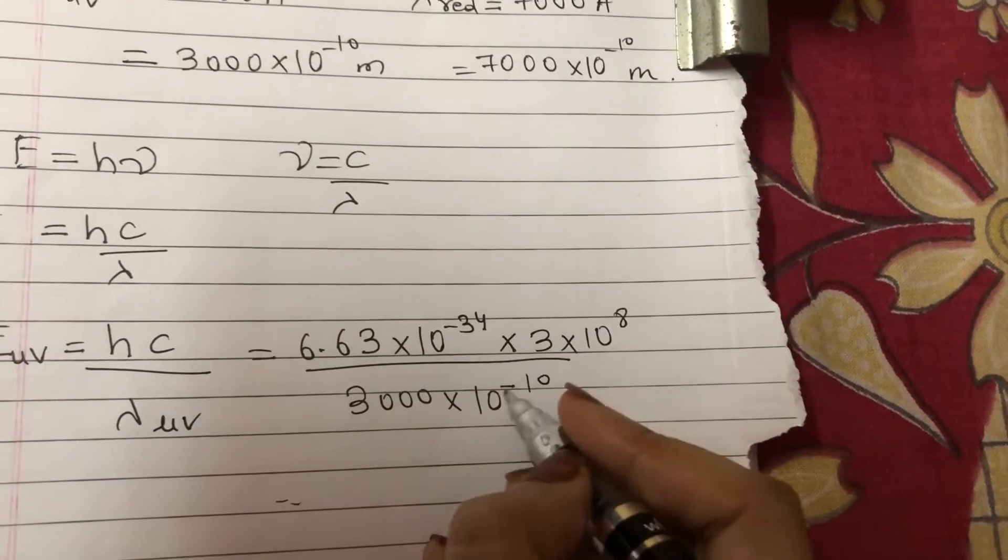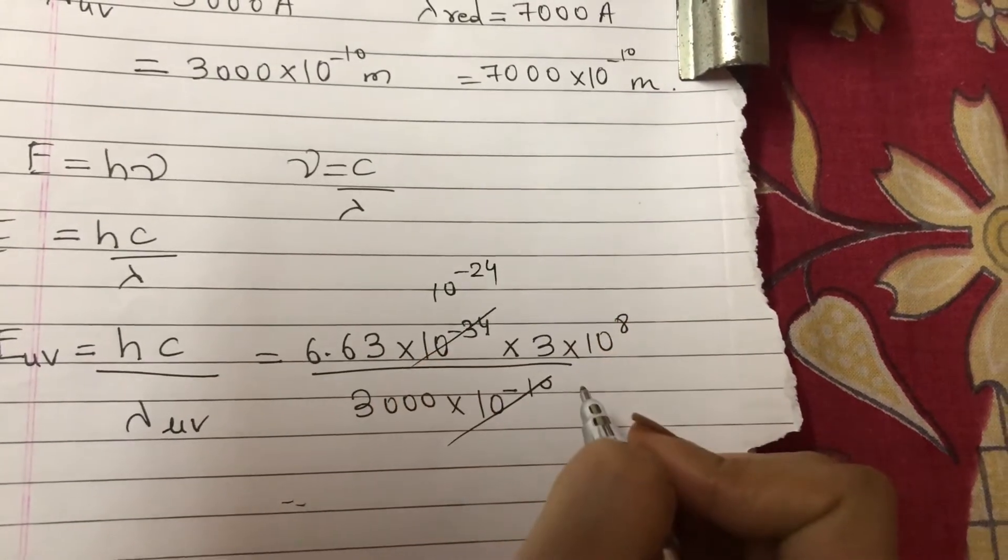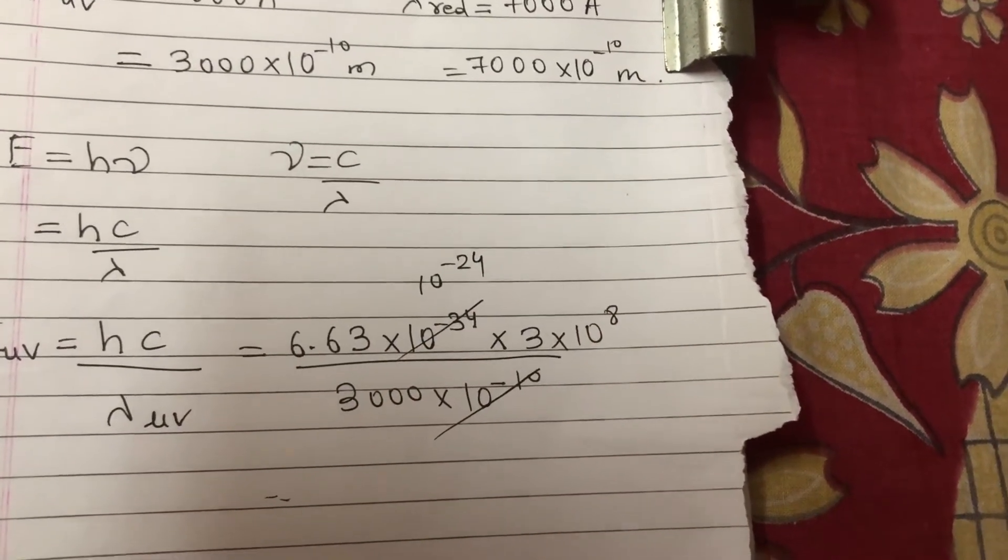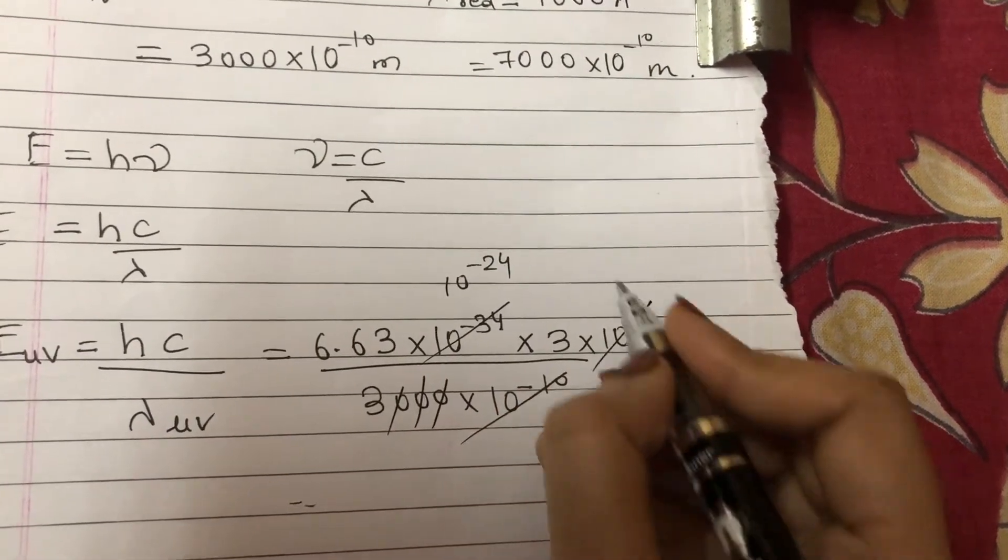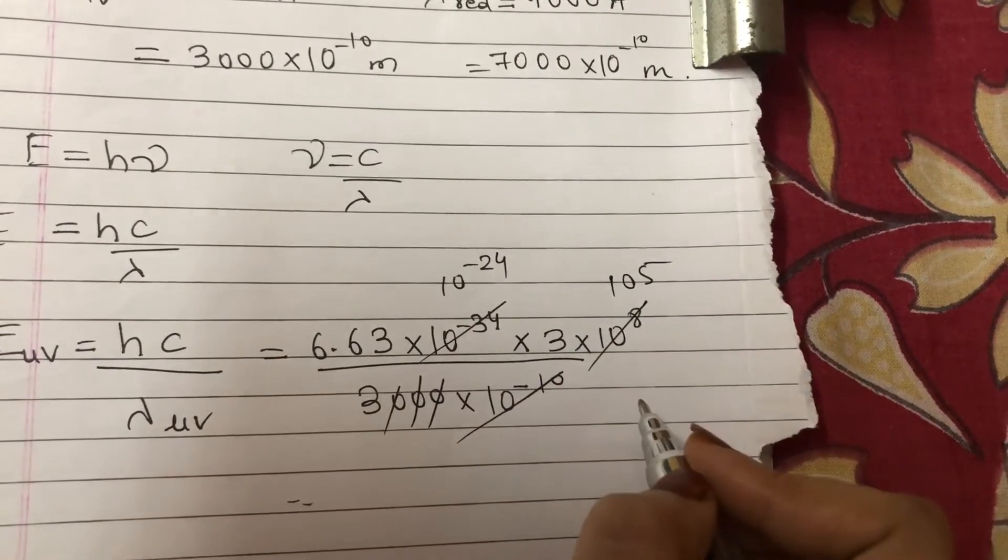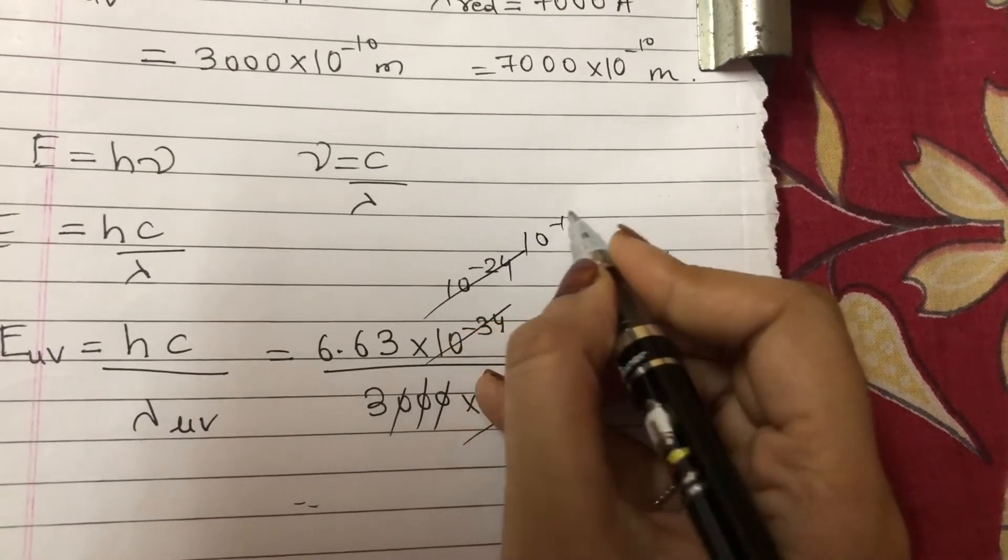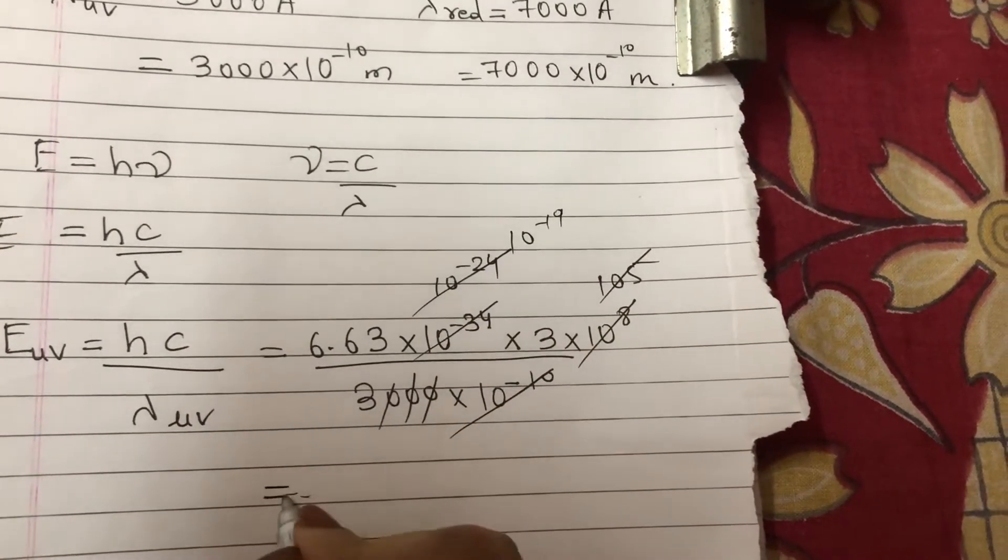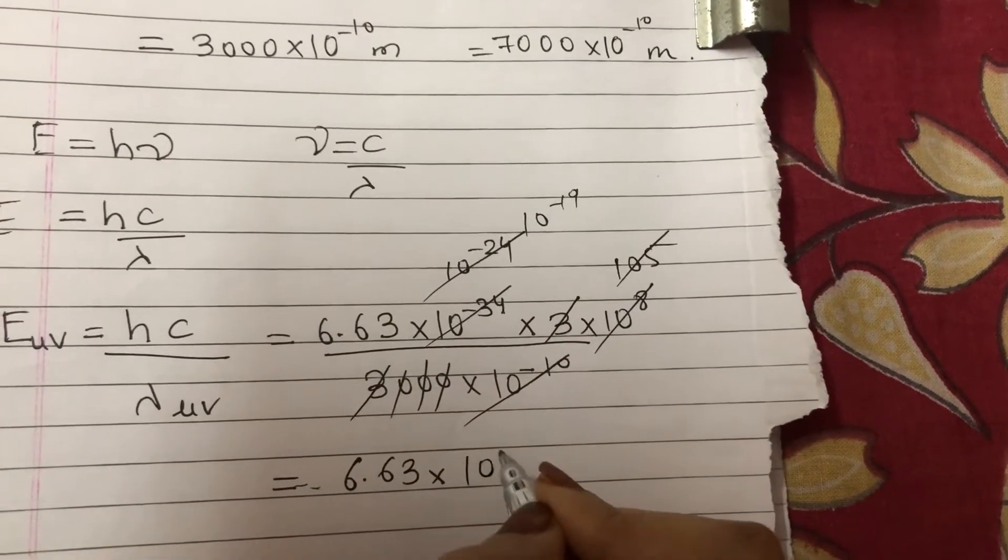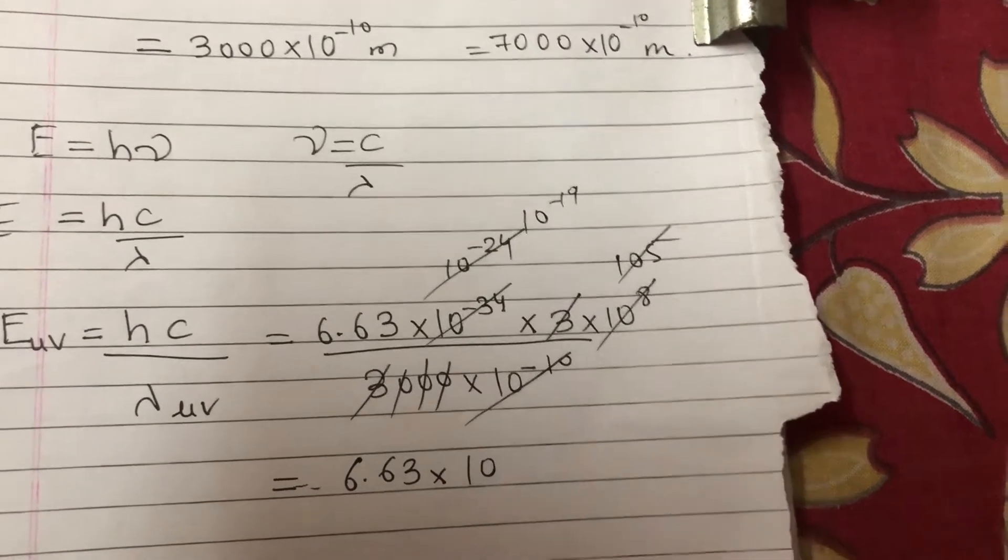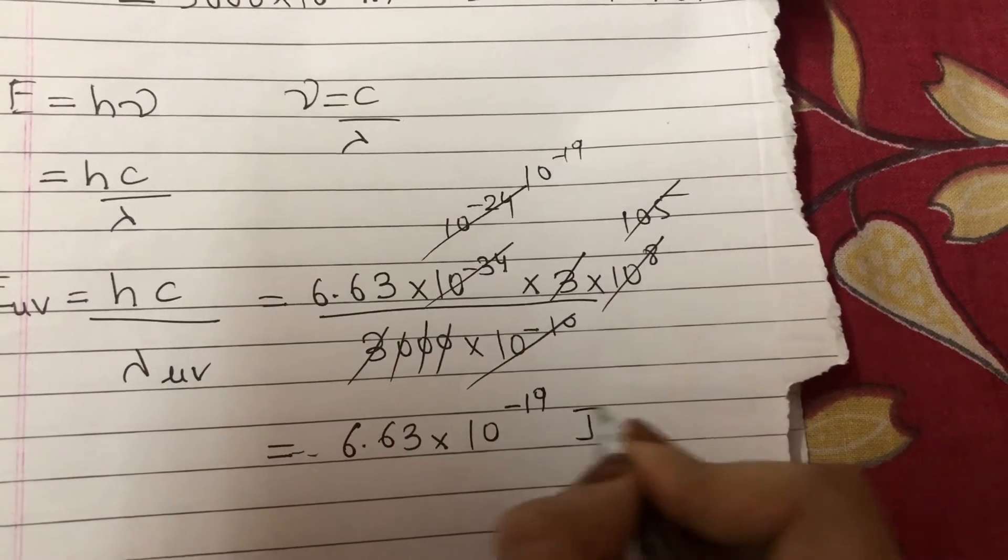10^-10 times 10^-34 gives us 10^-24. We can cancel 3 zeros from here and 3 zeros from here, so here I have 10^5. 5 minus 24 gives 10^-19. And this 3 and this 3 cancel. So it is 6.63×10^-19 joules.